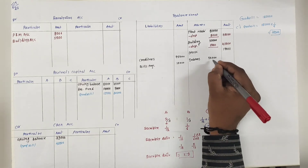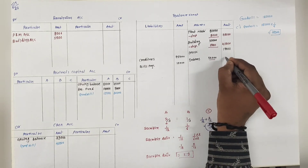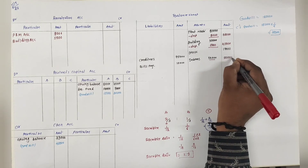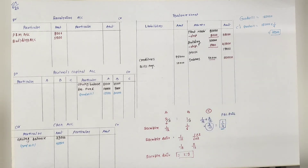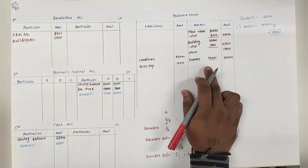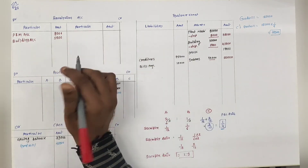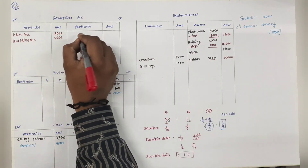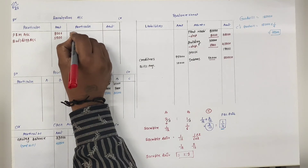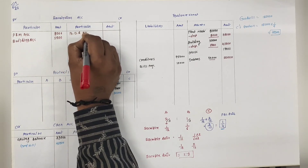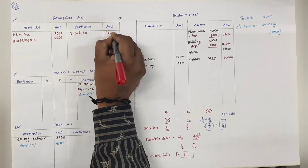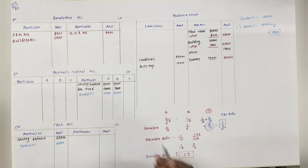All debtors are solvent - यानि कि 50,000 है वो solvent है. Balance sheet में old balance sheet पे 50 में से 4 bad debt reserve minus किया था. अब minus करने की ज़रूरत नहीं - उतना add कर दिया वापिस. Revaluation के credit side - BDR account 4,000.